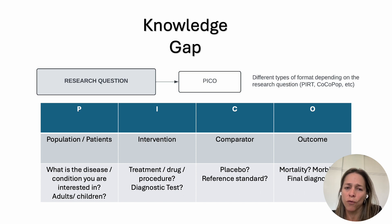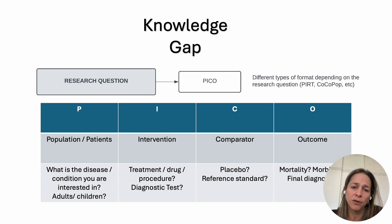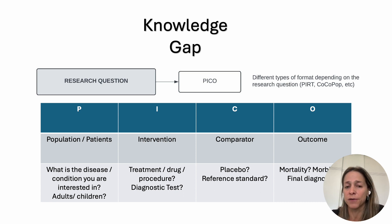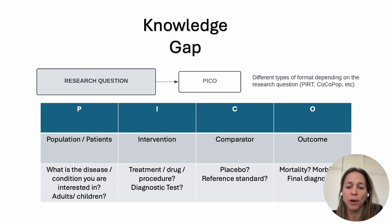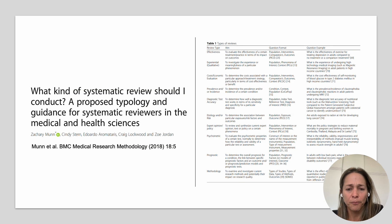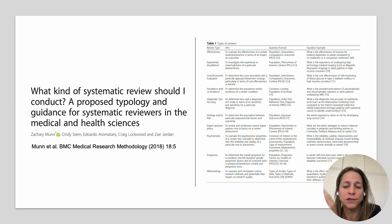Usually this question is in the PICO format, which is mainly used for interventional studies. Nevertheless, there are other types of reviews that will assess diagnostic accuracy or prevalence, and each type will have a different specific question format. The PICO format has P for population, I for intervention, C for comparator, and O for the outcome. As you can see in this slide, here's a list of different types of reviews and the different question formats used with each.